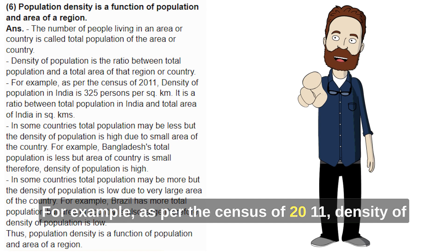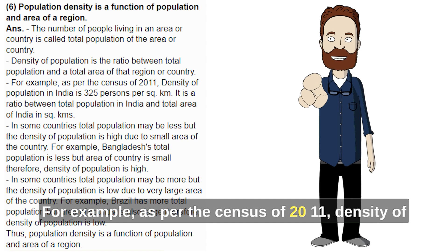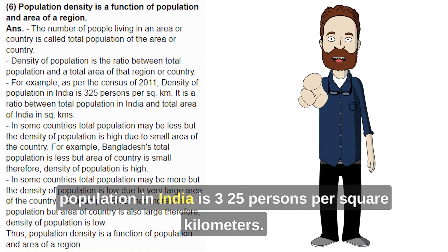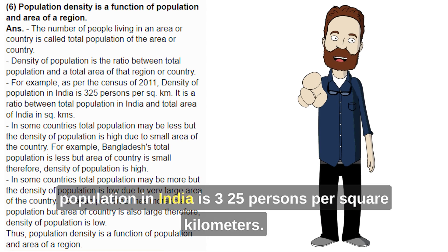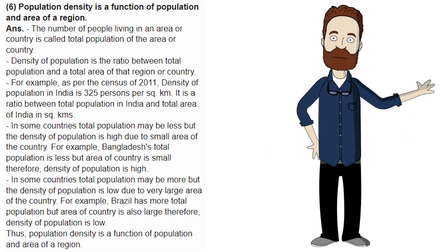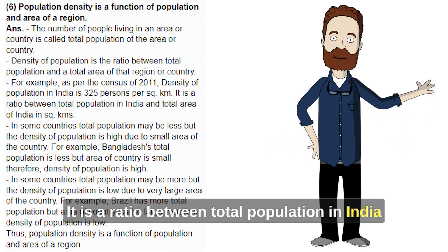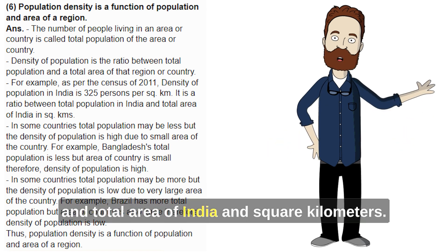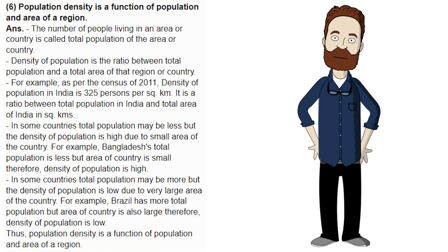For example, as per the census of 2011, the density of population in India is 325 persons per square kilometer. It is a ratio between the total population in India and the total area of India in square kilometers.